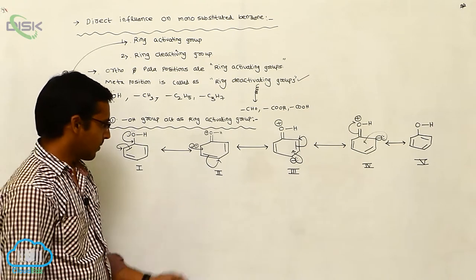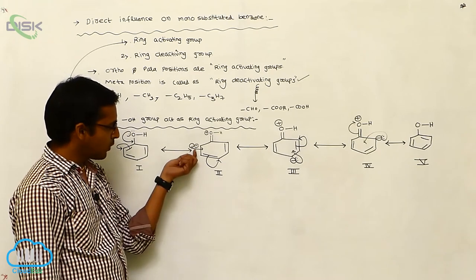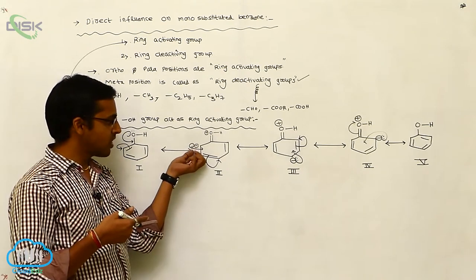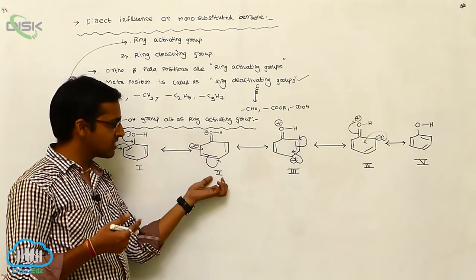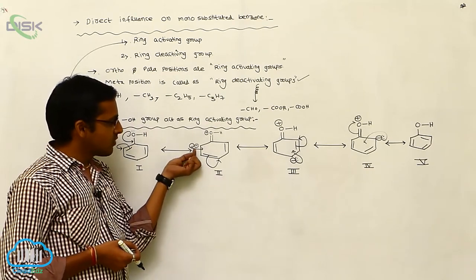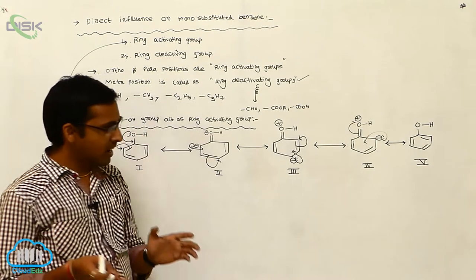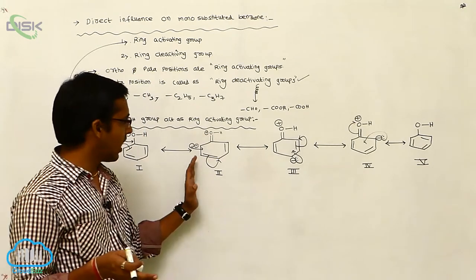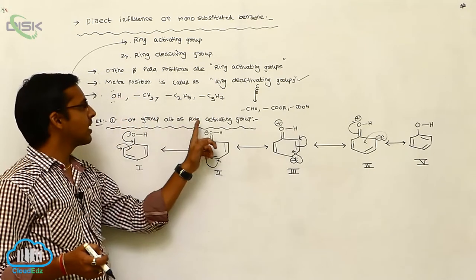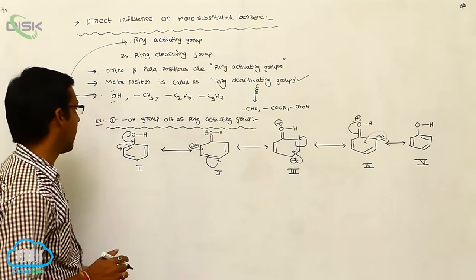In the second resonating structure, the ortho position gets a negative charge. A negative charge indicates a minus-I effect, which means electron density increases at that position. The electron density increases at ortho and para positions. That is why the OH group acts as a ring-activating group — it shows a minus-I effect.